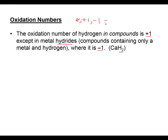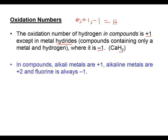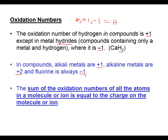When you have alkali metals present in compounds, we expect them to form plus one charged cations - the oxidation number for alkali metals would always be plus one. For alkaline earth metals, we predict the oxidation numbers would be plus two in compounds. And fluorine has an oxidation number of negative one whenever we run into it in a compound.